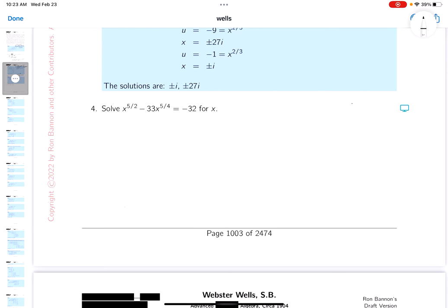Okay, my recommendation is to make a substitution. I'm going to say u equals x to the 5/4. The main reason I'm doing this is I noticed that u squared would equal x to the 5/2. Let's write that down.